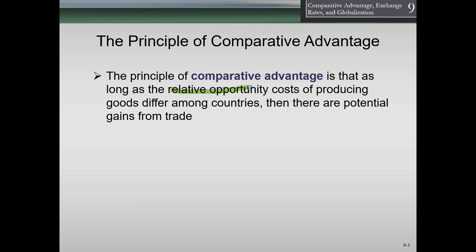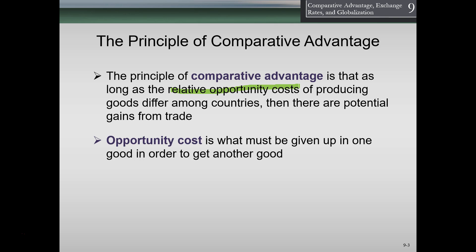Note what we have here — relative differences in opportunity costs. This does not mean that two countries need an absolute advantage in two different types of production. As long as their opportunity costs differ, it's usually the case that they can benefit through specialization and trade. Opportunity cost is what must be given up in one good in order to get another good.